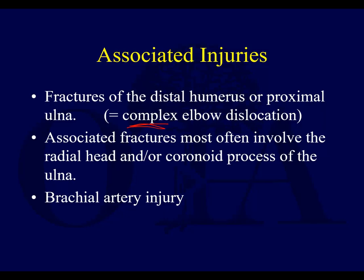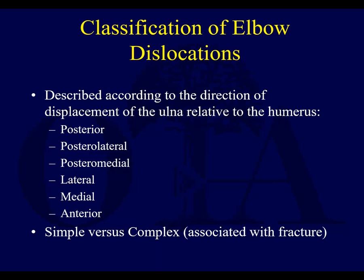Complex dislocations often occur with a radial head and coronoid fracture. When you get all three — radial head fracture, coronoid fracture, and an elbow dislocation — that is the so-called terrible triad. Keep that in mind: radial head, coronoid, and a dislocation equals a terrible triad injury. It is a bad injury to have.